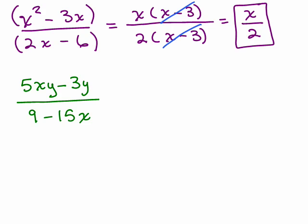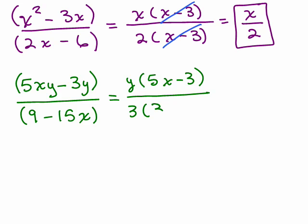Okay, here's another problem. Again, the first thing we're going to look for when we have two terms is, is there a common factor? So in the numerator, we have a common factor of Y. So that'll give you 5X minus 3. I'm going to guess there's probably going to be a 5X minus 3 or a 3 minus 5X in the bottom. What's the common factor here for 9 minus 15X?